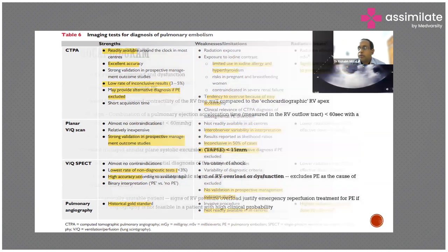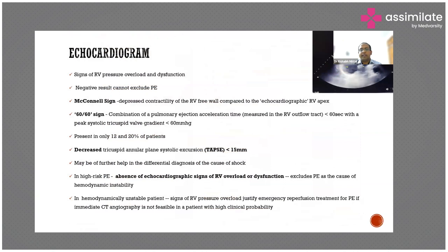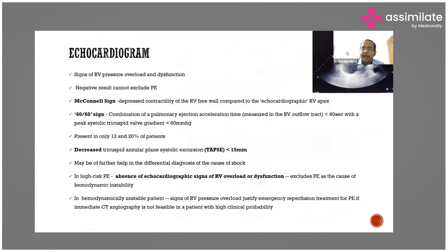Coming to echocardiography — in pulmonary embolism we look for RV dysfunction. Echo will show that the RV is not contracting properly. One specific sign is McConnell's sign: there is depressed contractility of the RV free wall — the RV free wall doesn't move much — but the RV apex moves very well. If McConnell's sign is found, we can be very suspicious that the patient may be having pulmonary embolism.